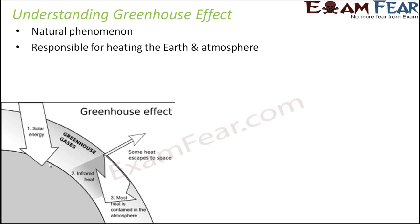The solar radiation reaches the outer atmosphere. Some part of the solar radiation gets reflected by the gases and the clouds in the outer atmosphere itself. Some part gets absorbed by the gases and the clouds. More than 50% of the solar radiation reaches the earth's surface — the land, ocean, etc. — and heats them up. When they get heated up, they release infrared radiation.